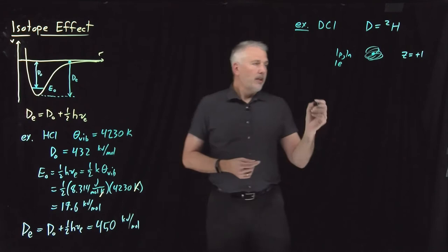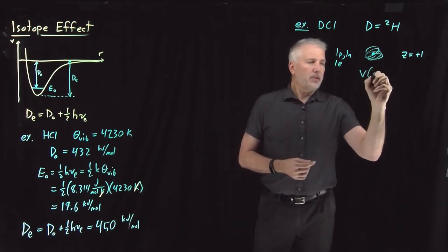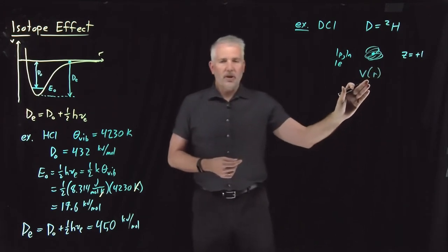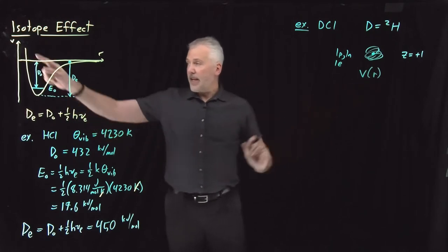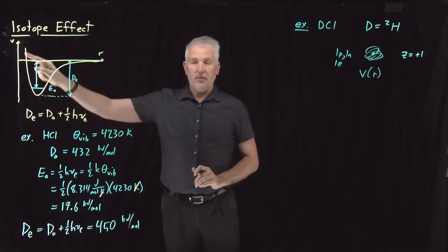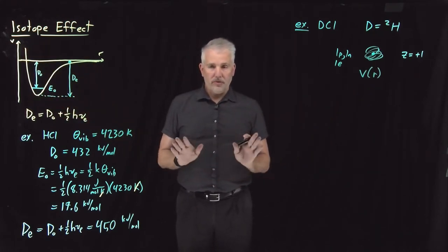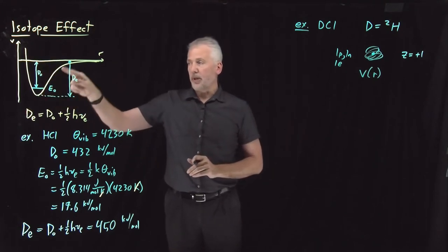So what that means about the covalent bonding well is actually nothing. The potential energy describing the interaction is given by the interaction between the electrons and nuclei. We haven't changed anything about the electrons or the nuclei — we've only made it heavier, we've only changed the mass. So the potential energy curve for a DCl molecule is exactly the same as the potential energy curve for the HCl molecule.